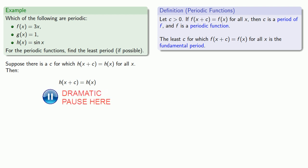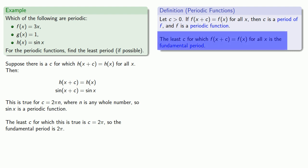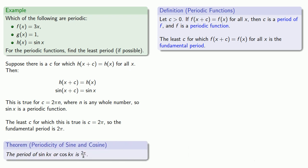Where n is any whole number, so sine of x is a periodic function. The least c for which this is true is c = 2π, so our fundamental period is 2π. You might remember from trigonometry a more general result: the period of sin kx or cos kx is 2π/k.